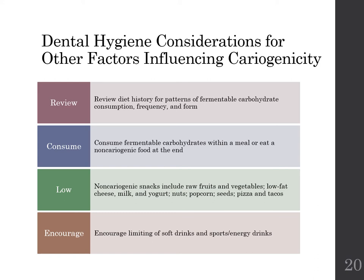We're going to recommend that patients consume fermentable carbohydrates with a meal or eat with a non-cariogenic food at the end. We're going to recommend non-cariogenic snacks like raw fruits and vegetables, low-fat cheese, milk and yogurt, nuts, popcorn, seeds, pizza and tacos. In box 18.2 on page 357, there's a list of snacks that promote little or no plaque acid — all of those are good sources to recommend to patients. However, be very careful when recommending foods high in fat like red meats — we don't want to increase risk of heart disease and diabetes. We also want to encourage limiting soft drinks and sports energy drinks.